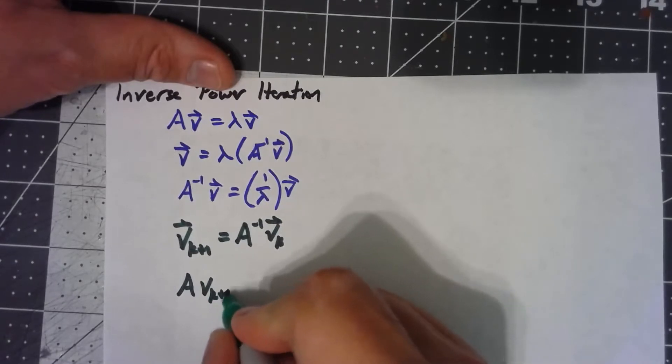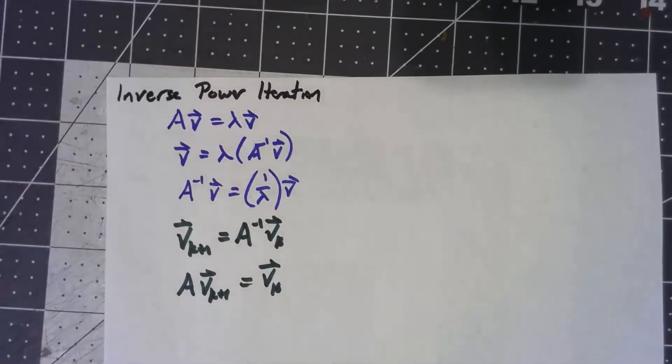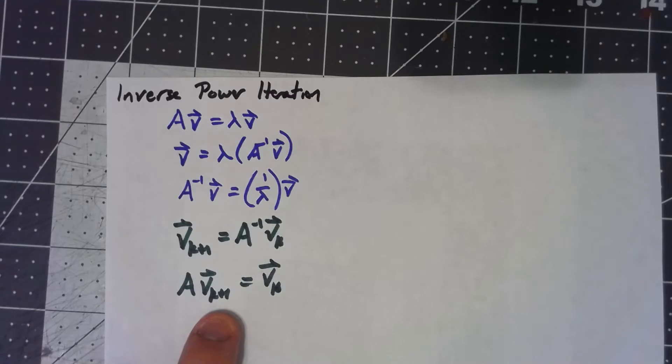so A times v_{k+1} is equal to v_k, and then if I know v_k, I'm just solving a system of equations to get v_{k+1}, and that's something we've studied repeatedly. There's efficient ways of figuring this out, so there's efficient ways of getting the next guess even for the inverse matrix without knowing the inverse matrix.